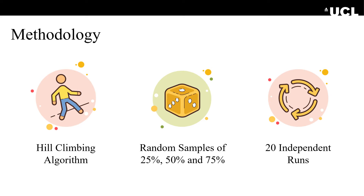For the genetic improvement process, we use the default hill-climbing algorithm implemented in Gene. We generate subsets of randomly sampled test cases at 25%, 50%, and 75% because EVOSuite generates test suites that cover all branches and statements, so we needed variation in coverage metrics. For each of the five automatically generated test suite types, we have four sets: 25%, 50%, 75%, and 100%. Due to the randomness of the GI process, we also execute 20 independent runs, yielding 20 sets of patches for each sample, type, and program.